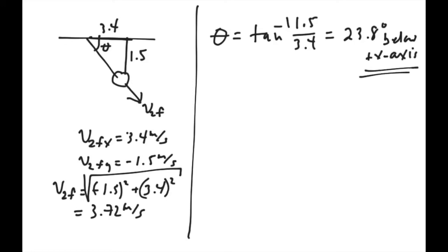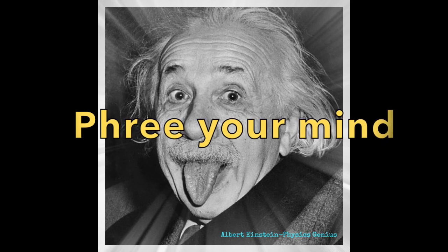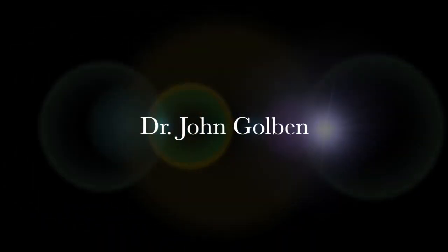So this is more information than we were asked for, but in other problems, we may be asked for this. The final velocity of mass 2, in terms of speed, and its angle, 23.8 degrees below the positive x-axis. Thank you very much.